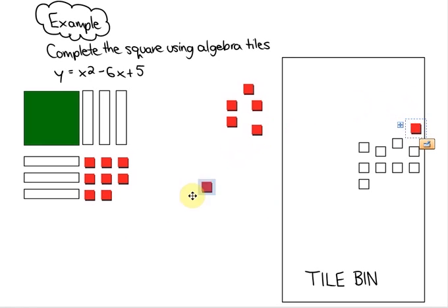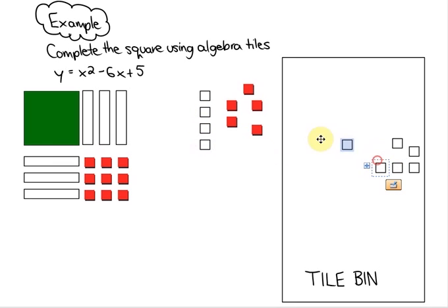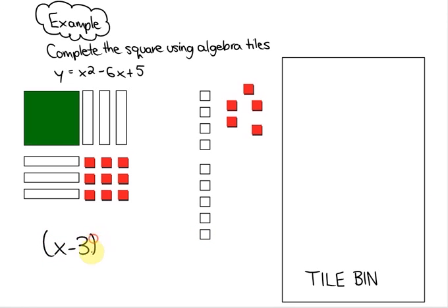Alright, so what I've done right now is completed the square, but I'm not allowed to do that without adding negative 9 integer chips. Alright, so this completed square, as you can see from the previous example, this completed square would be x minus 3 squared.